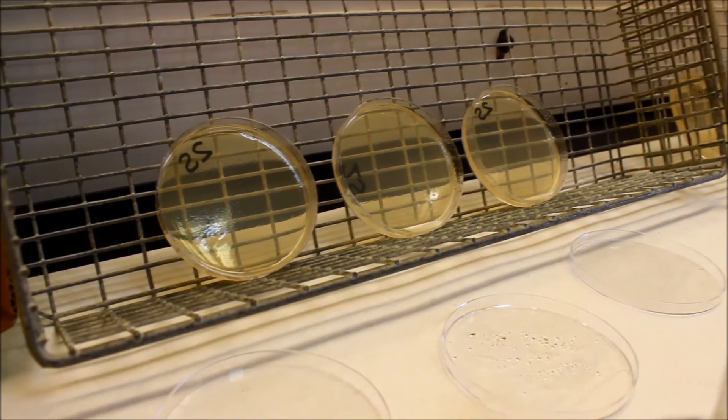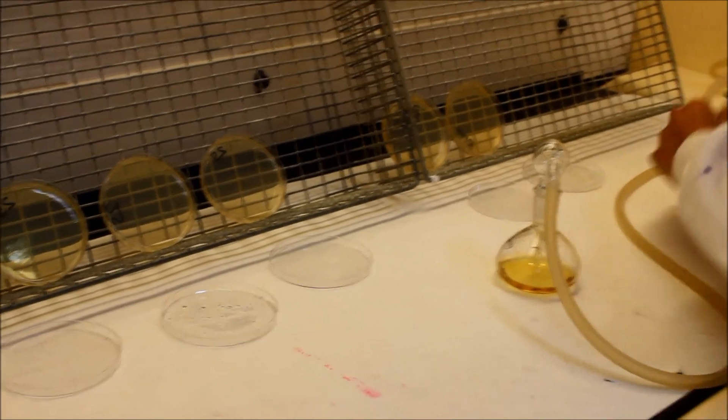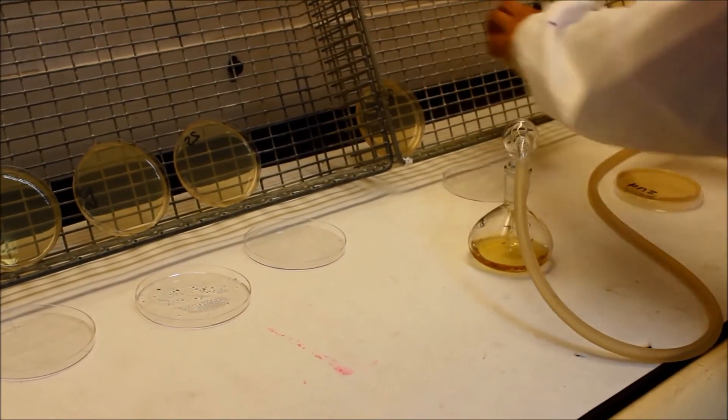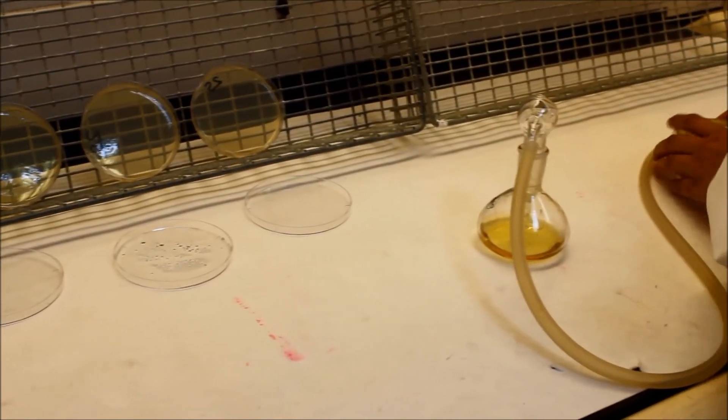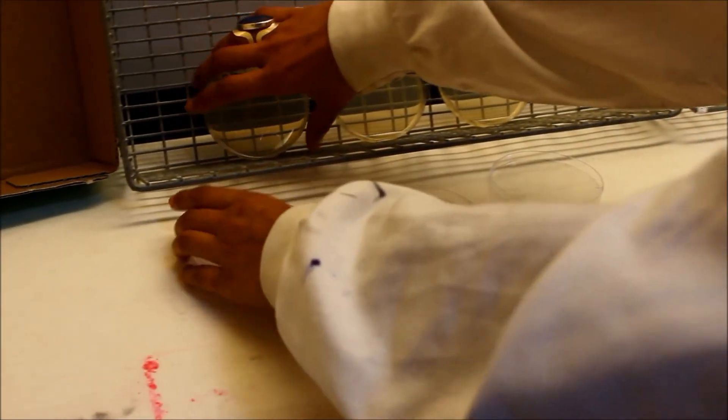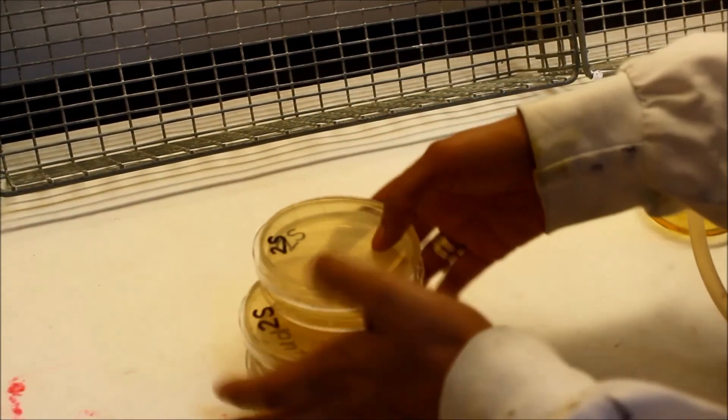Once you have finished spraying your 3 spread and 3 undisturbed plates with Farge, replace the lids carefully. These plates will get incubated at 30 degrees Celsius. You must incubate these at 30 degrees Celsius, not 37 degrees Celsius.